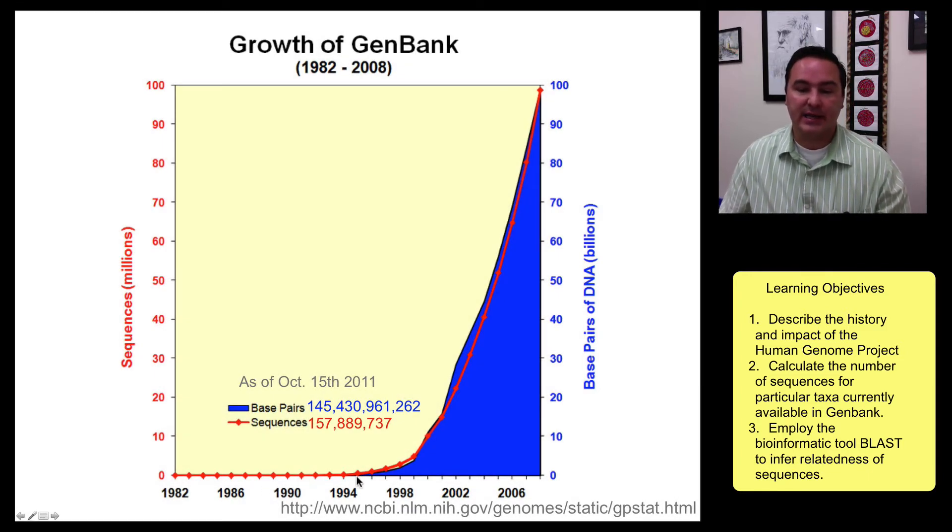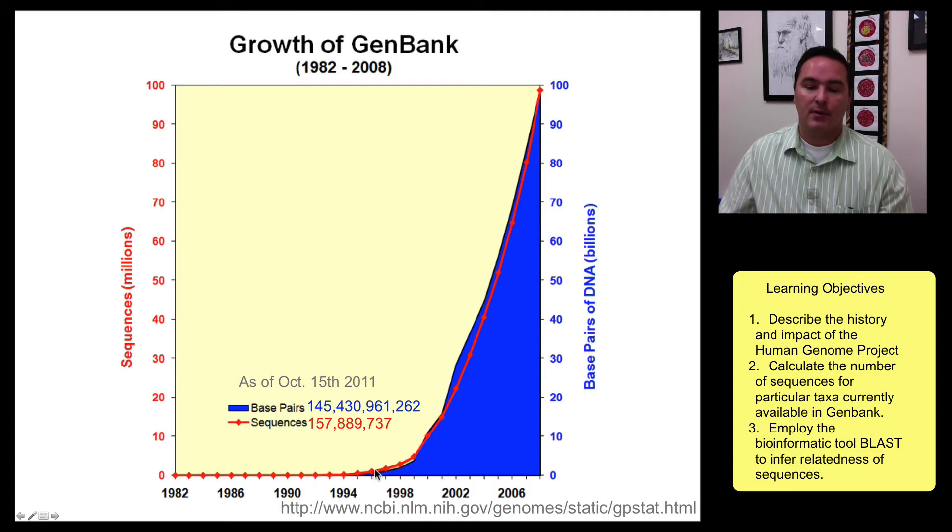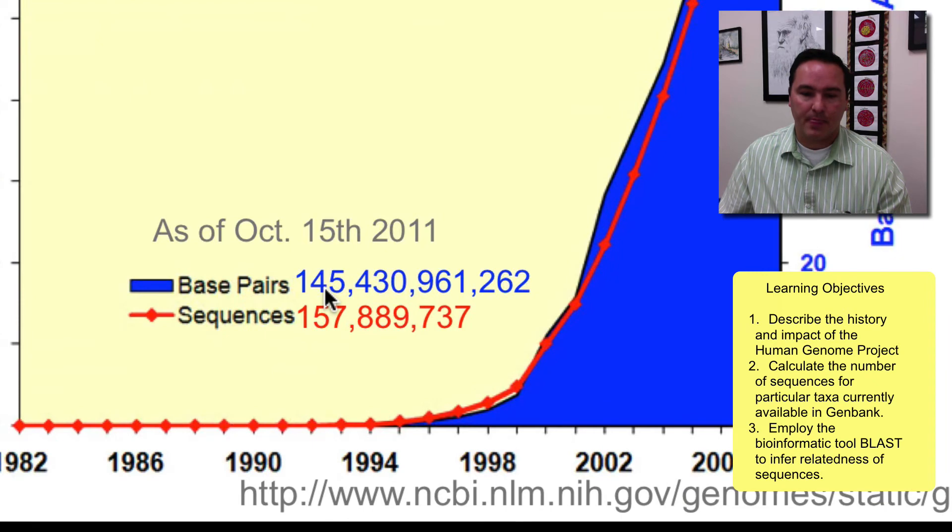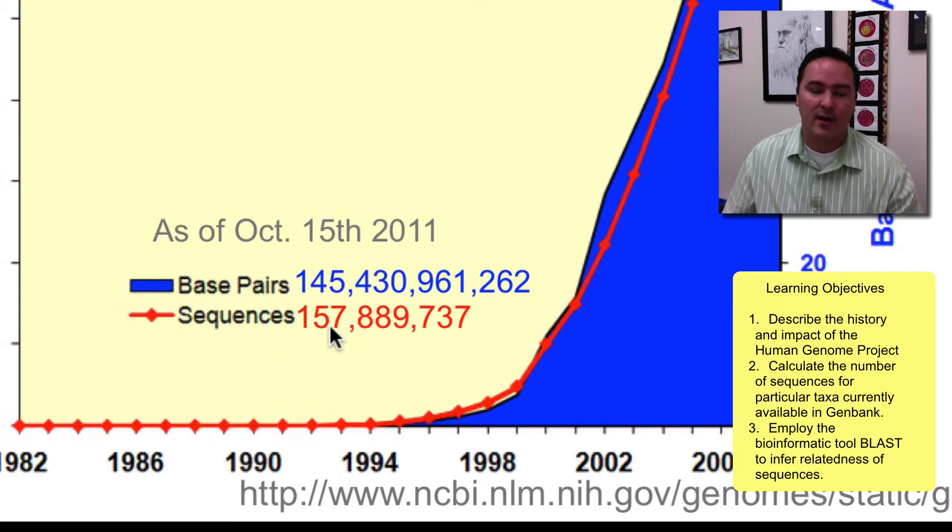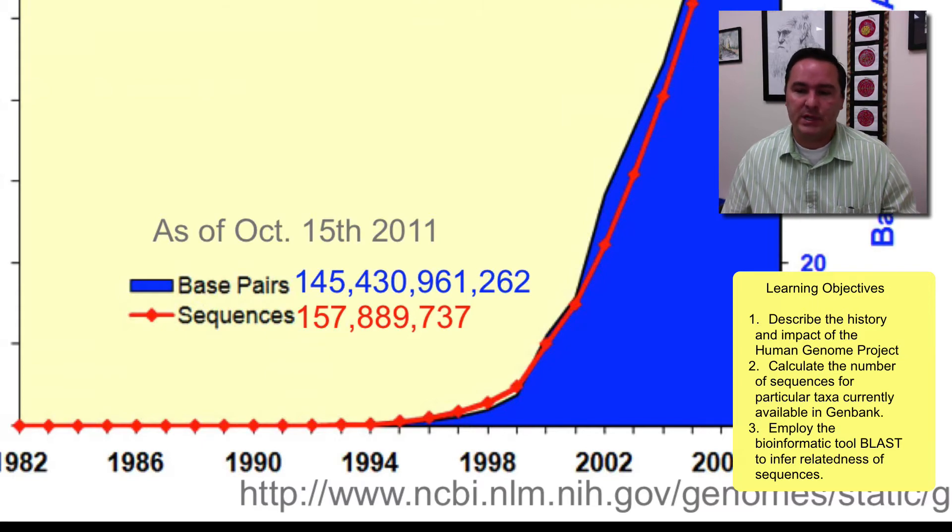As you can see, this looks like an exponential growth curve here. The Human Genome Project starts right back here, and they're just learning how to do things, but once the process of doing DNA sequencing gets easier and more efficient, it really takes off, and you have this huge growth. As of at least last year, last October, or actually a couple Octobers ago, I haven't updated this for a while, there were 145 billion base pairs coming from 157 million sequences.